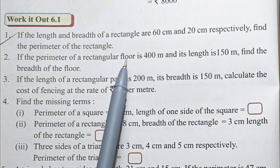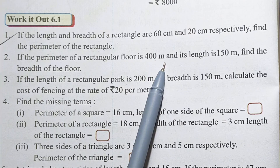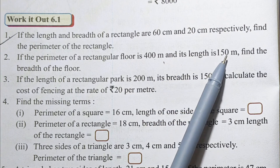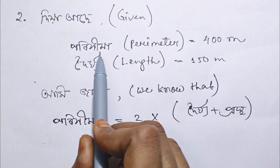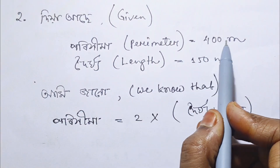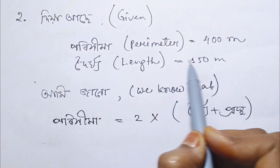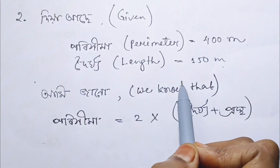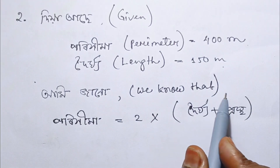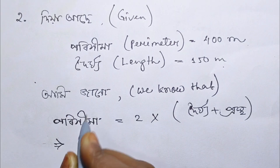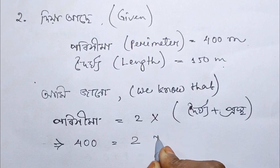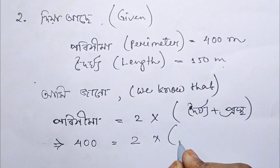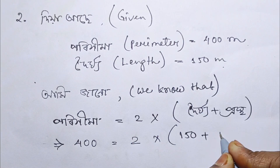If the perimeter of a rectangular floor is 400m and its length is 150m, find the breadth of the floor. We know that the perimeter is 2 into (L + B), so perimeter = 400m and length = 150m.